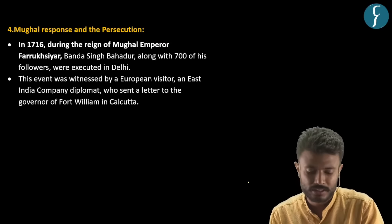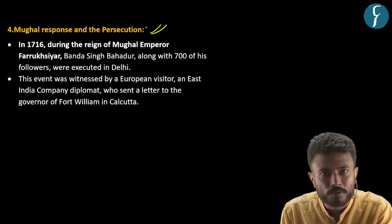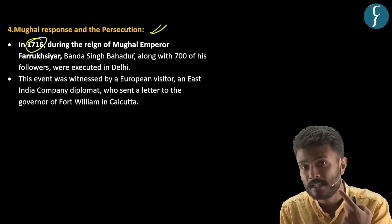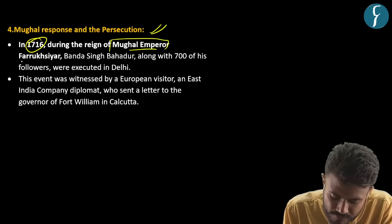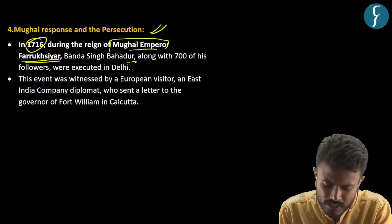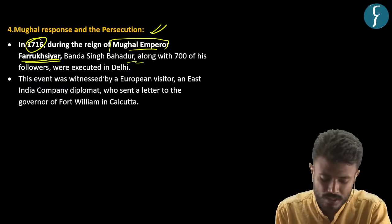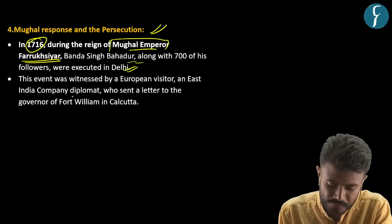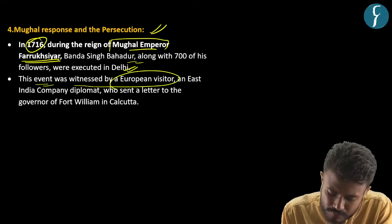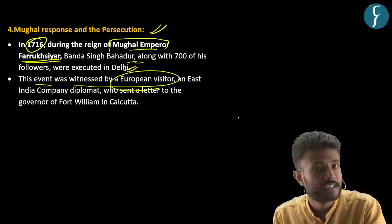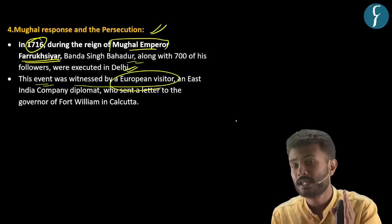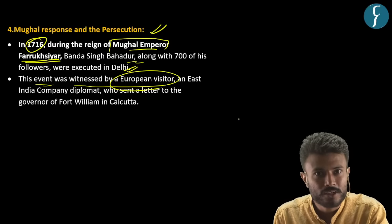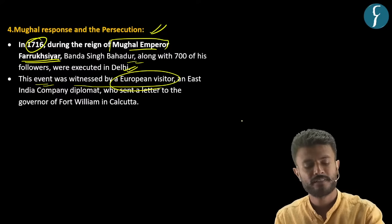In 1716, during the reign of Mughal Emperor Farrukhsiyar, Banda Singh Bahadur along with his 700 followers was executed in Delhi. This event was also witnessed by a European visitor and East India Company diplomat, as that was the time when the East India Company was trying to gain a strong foothold in Indian territories.